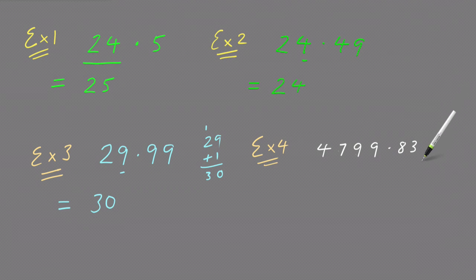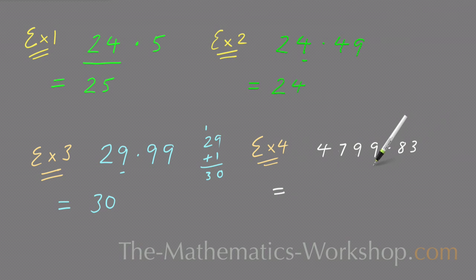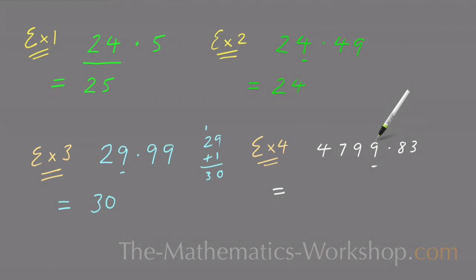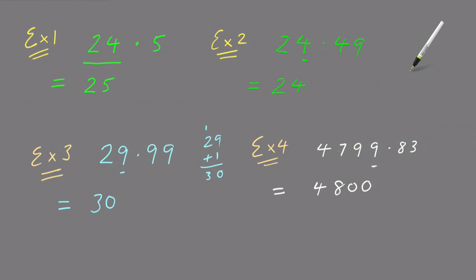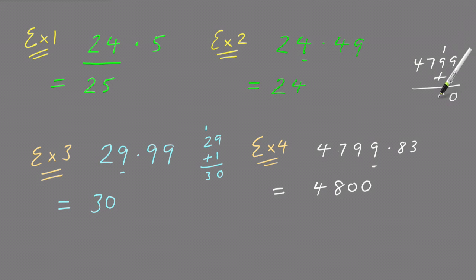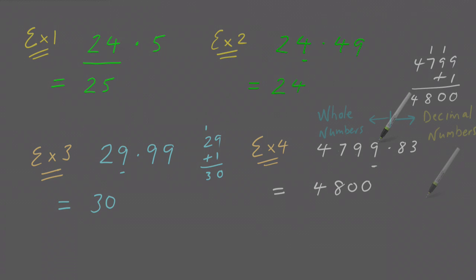In the last example I want to round 4799.8-something to the nearest whole number. The number in the units column is nine, and the number on its right is eight — which is five or more — so I round that nine up one, adding one to 4799. Nine plus one is ten, put down zero carry the one; nine plus one is ten, put down zero carry the one; seven plus one is eight; and four stays four. So the answer is 4800.